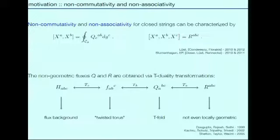Let me first review the setting. What we heard yesterday is that non-commutativity and non-associativity for the closed string can be characterized by these expressions, where the commutator of two closed string coordinates is given in terms of the Q-flux, and the cyclic double commutator of three closed string coordinates can be expressed in terms of the R-flux. This has been investigated in papers which appeared during the last two years.